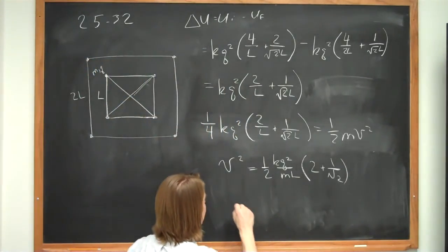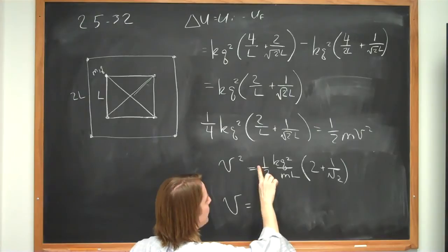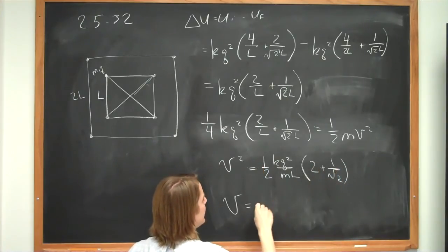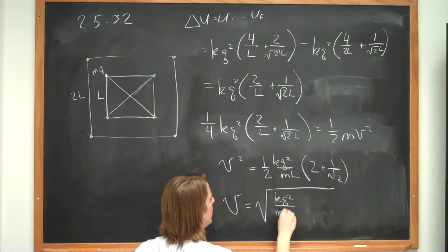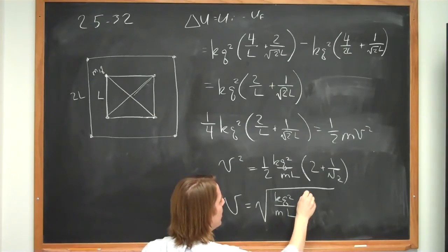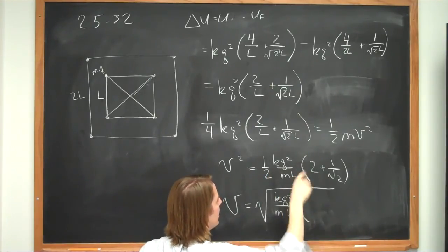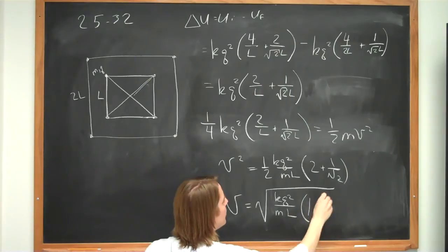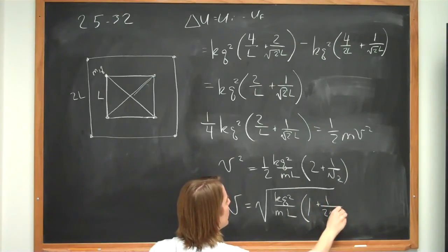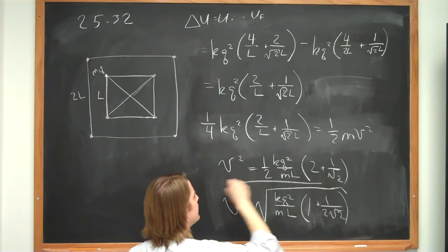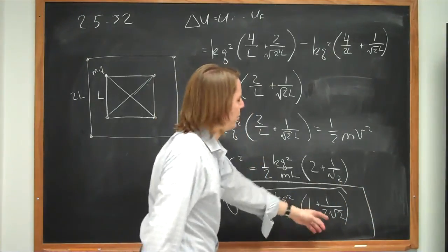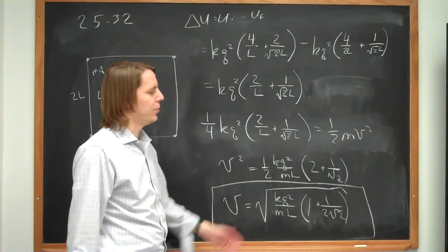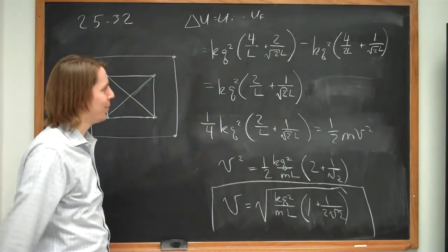And then finally, if we want to get the velocity here. The velocity, I'll distribute this half in there and take the square root. And you get the velocity of the square root of kq squared over ml times 1, half of 2 is 1, plus 1 over 2 times the square root of 2. And that matches the back of the book, except that they call this 1 over the square root of 8. And we need to actually give it a direction outward. Right there, all going outward. That's it.